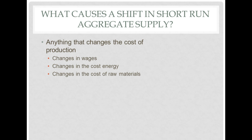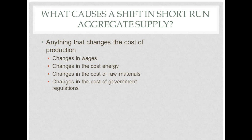Changes in the cost of raw materials can also decrease aggregate supply. For example, Hurricane Andrew in the 1990s knocked out a huge portion of the lumber industry, massively driving up the price of housing — a big chunk of the economy — and aggregate supply decreased. Additionally, the cost of government regulations: if the government requires new environmental laws on a product, that makes the product more expensive to produce and therefore aggregate supply decreases. Anything that increases the cost of producing a good will decrease the aggregate supply curve.